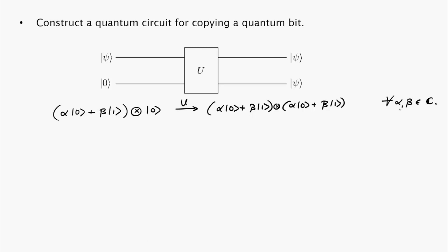Well here's the argument. Of course if it works for all alpha beta it must work when alpha equal to one beta equal to zero. So zero zero must be mapped under U to zero zero, and if beta equal to one we have one zero.